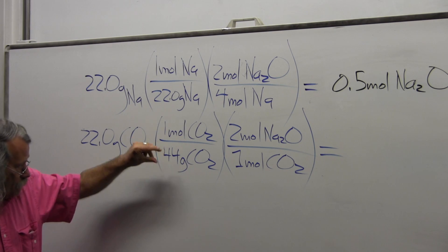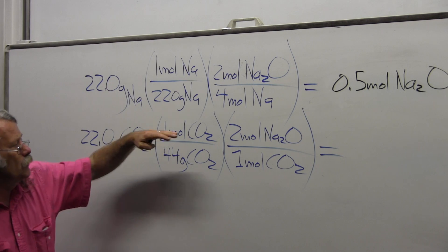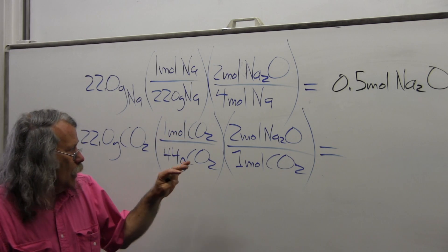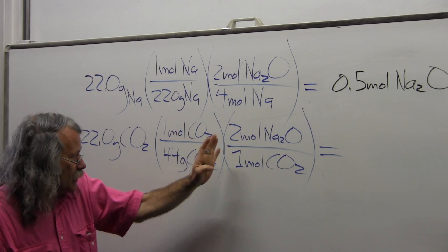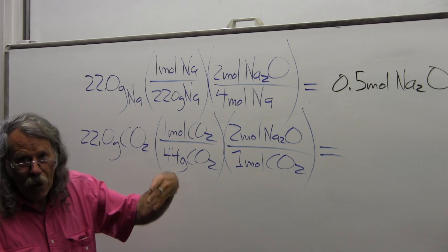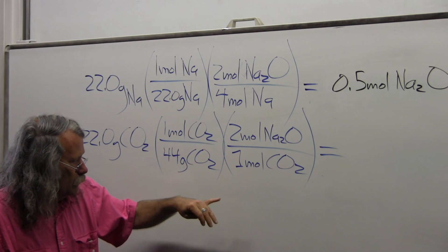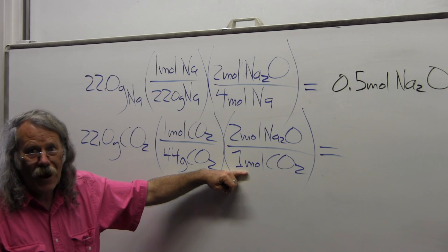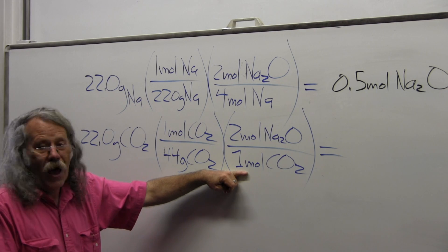The grams of carbon dioxide goes in the denominator, taking me from grams to moles of carbon dioxide. Then I'm going to have two moles of sodium oxide from the balanced equation in the numerator for every one mole of carbon dioxide reactant in the denominator.